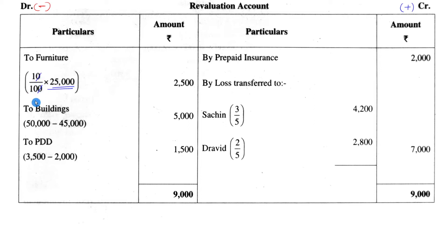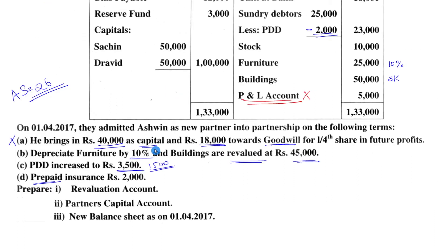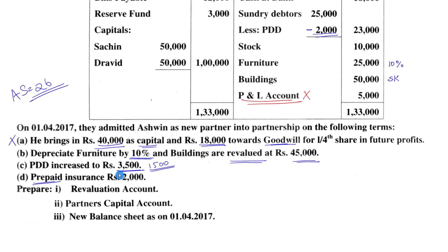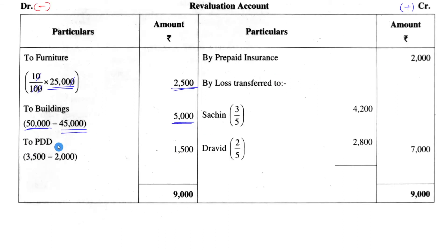Furniture of 25,000 at 10% depreciation gives 2,500 rupees. Since furniture is decreasing, it's an expense, so write on the debit side: 'To Furniture' — 2,500 rupees. Building revalued at 45,000 means a decrease of 5,000, so write on the debit side: 'To Building' — 5,000 rupees. For provision for doubtful debts increased to 3,500: we previously had 2,000, so the current year value to record is 1,500 rupees.